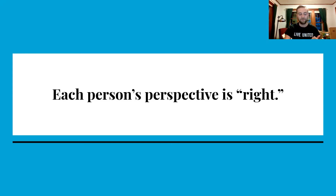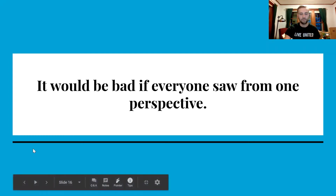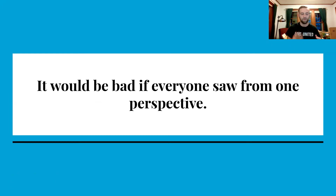This parable teaches us that even though we might want everyone to see things from our perspective, that would actually be pretty bad for society — because we would only see one piece of the picture. We would think that elephants were all just walls, or exactly like snakes. When only one version of the truth is allowed in a society — or even in a group of people — we lose the opportunity to understand anything completely.